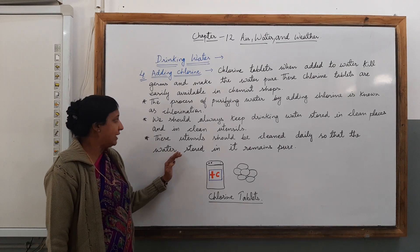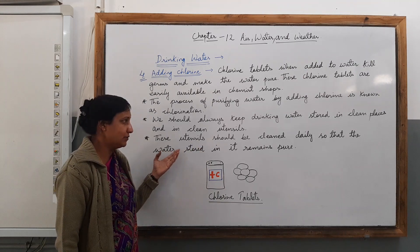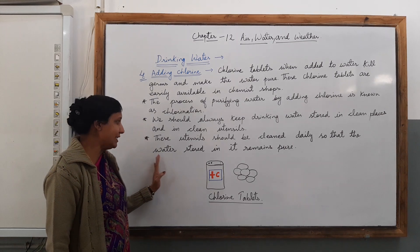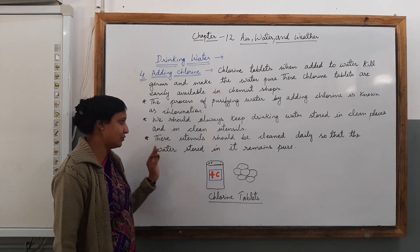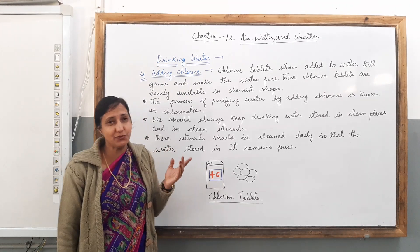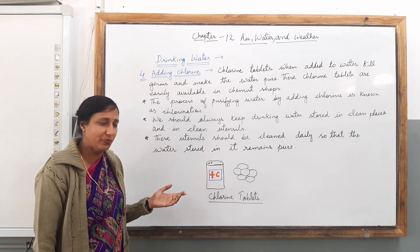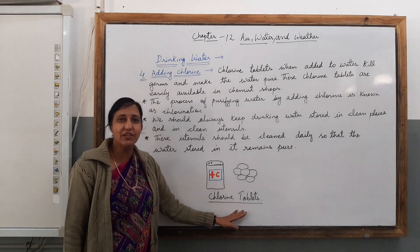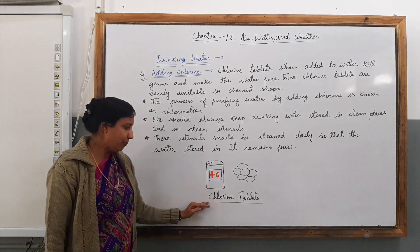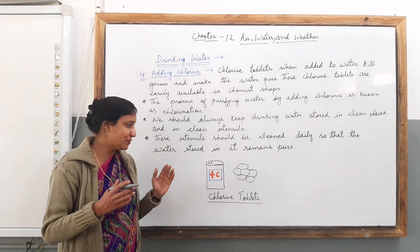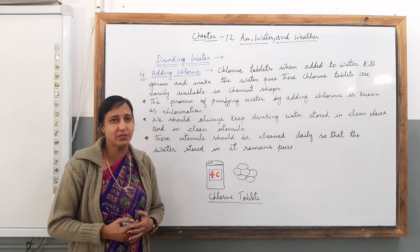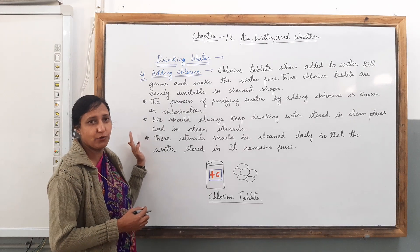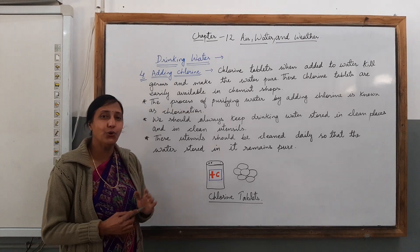We should always keep drinking water stored in clean places and in clean utensils. These utensils should be cleaned daily so that the water stored in them remains pure. Here I have drawn chlorine tablets for you to understand — these are available at the chemist's shop. When you put these tablets in water, the water is made suitable for our use. In today's class, you have learned the fourth method of making water suitable for use — that is by adding chlorine tablets.